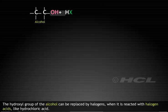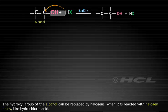The hydroxyl group of the alcohol can be replaced by halogens when it is reacted with halogen acids like hydrochloric acid.